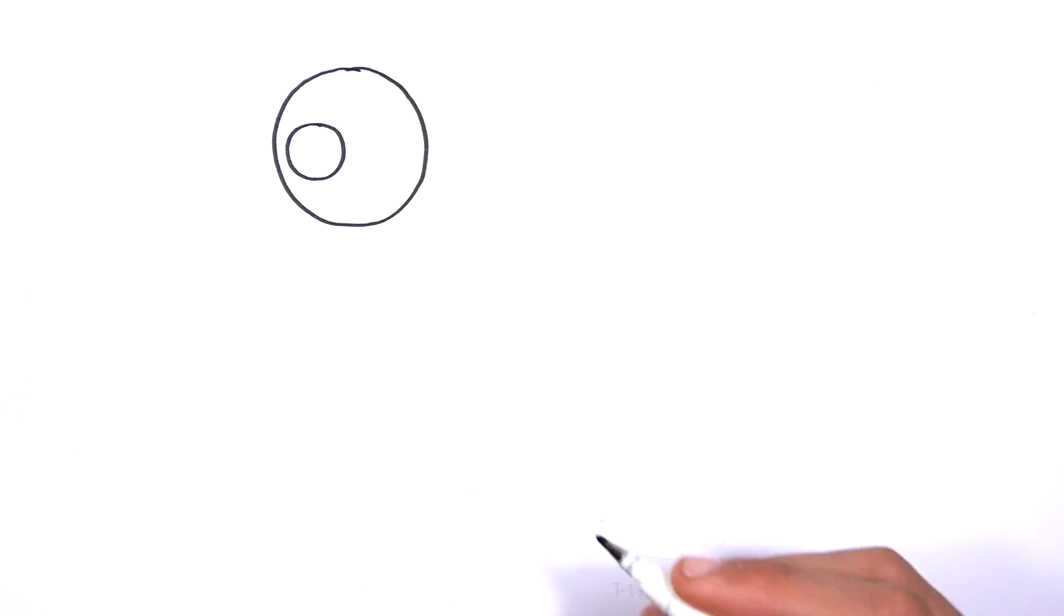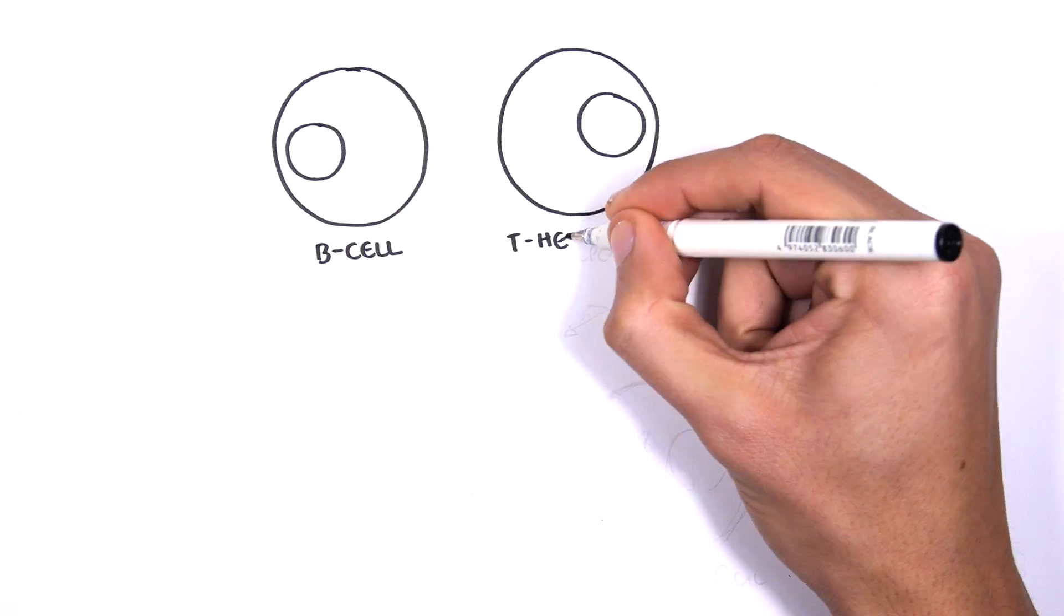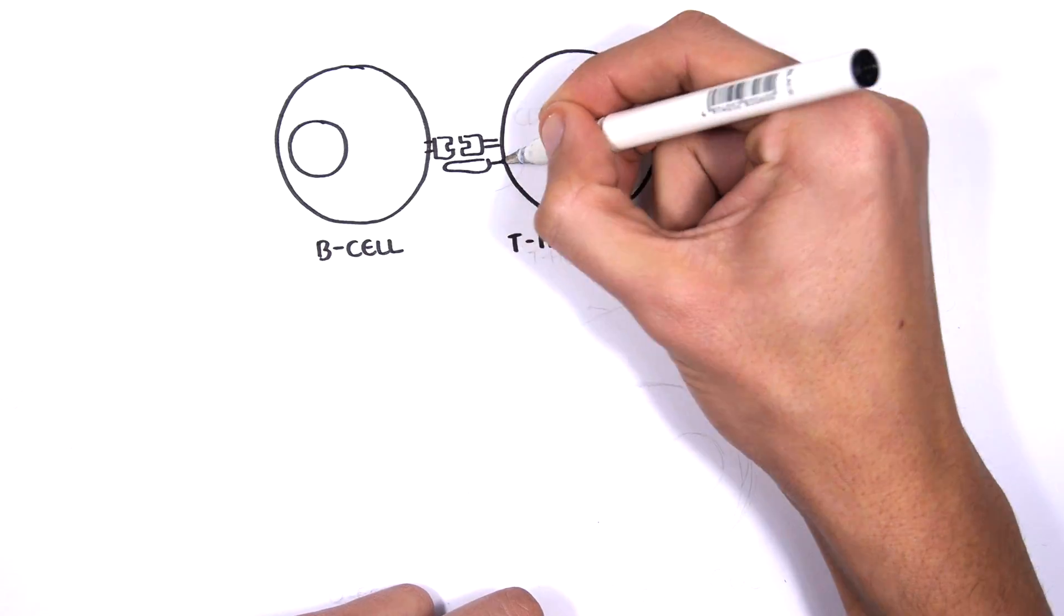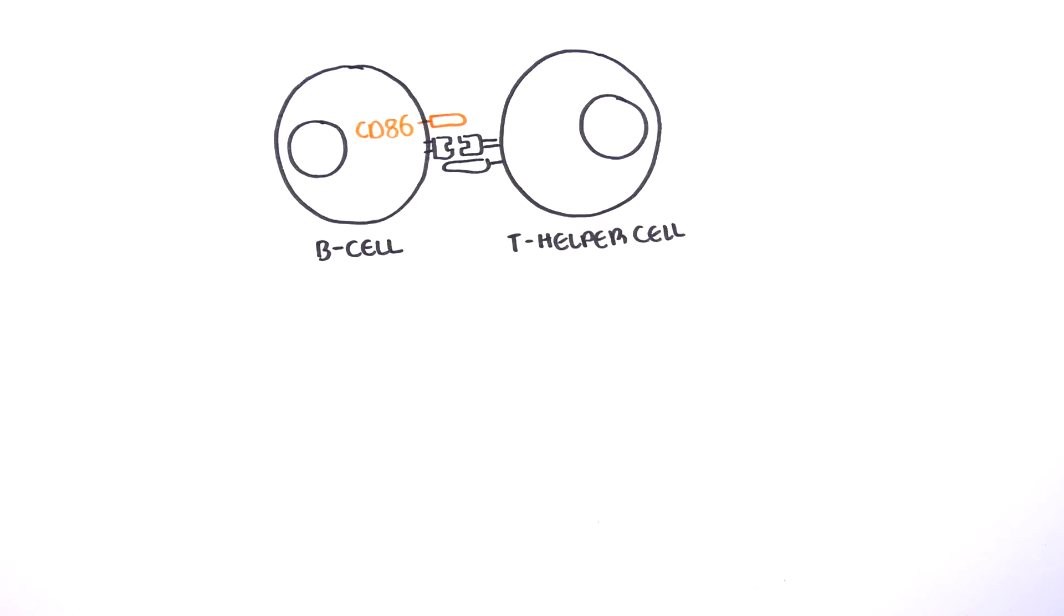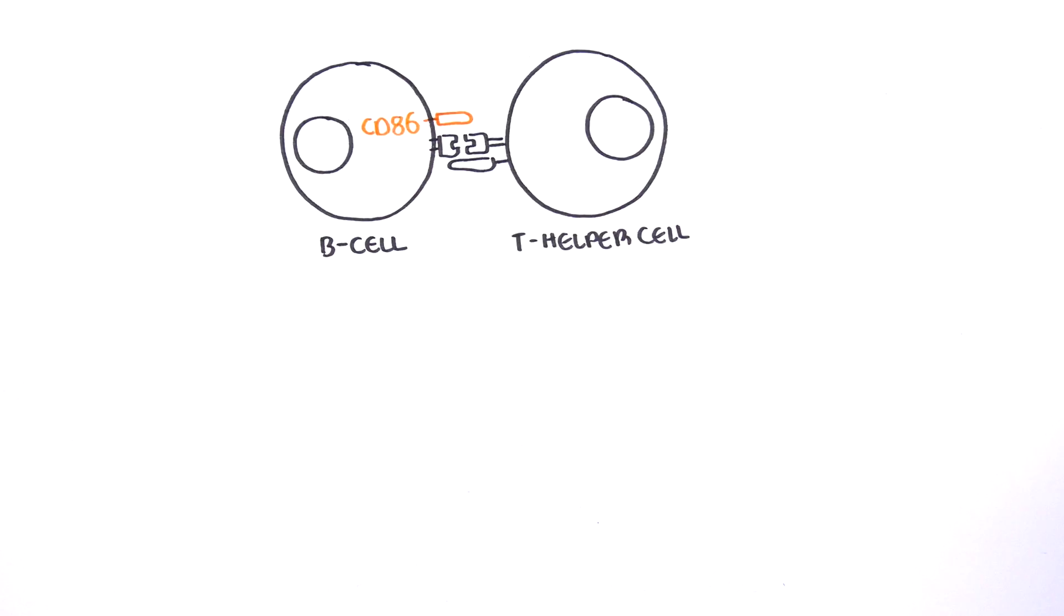Abatacept is a new medication used to inhibit the activity of CD86. Remember that B cells are activated by T helper cells, and that CD86 are found on the surface of B cells.